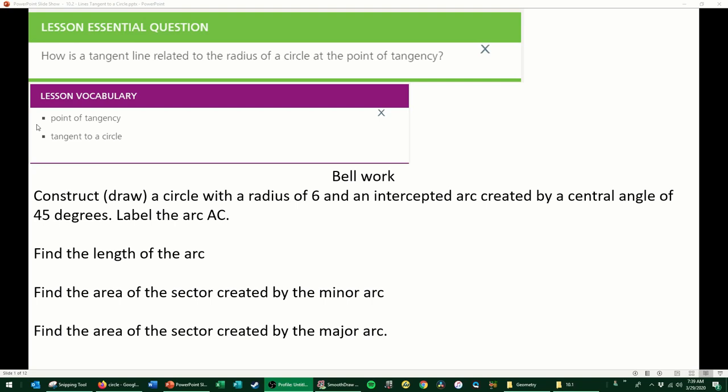Right now you've got Bell work. The Bell work says construct, which means to draw, a circle with a radius of 6 and an intercepted arc created by a central angle of 45 degrees. Label that arc AC. We need to find the length of the arc. Go ahead and pause the video, solve this, and then come back to see if you got it right.